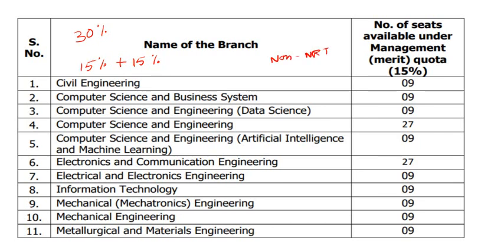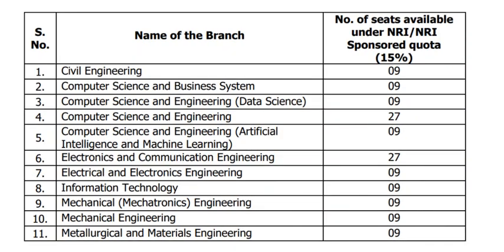For non-NRI quota, the branch-wise seats are: Civil Engineering — 9, Computer Science and Business Systems, Computer Science and Engineering with Specialization in Data Science, CSC Computer Science and Engineering — 27, Computer Science and Engineering with Specialization in Artificial Intelligence and Machine Learning — 9, Electronics and Communication Engineering — 27, Electrical and Electronics Engineering — 9.